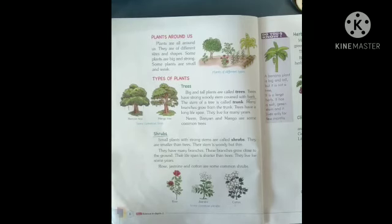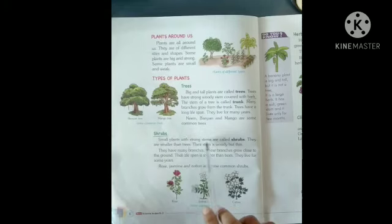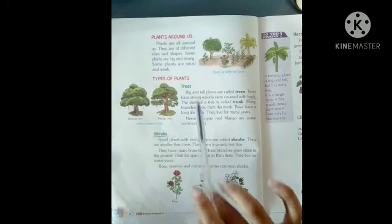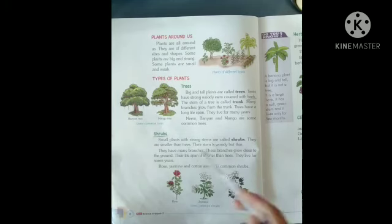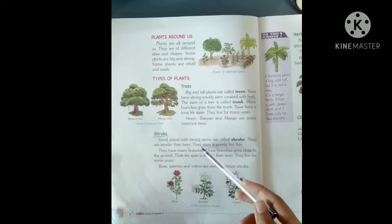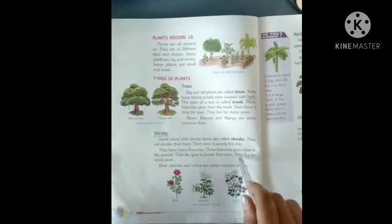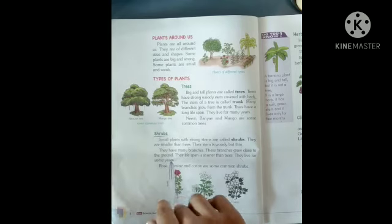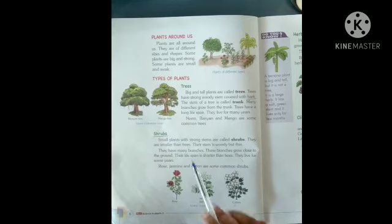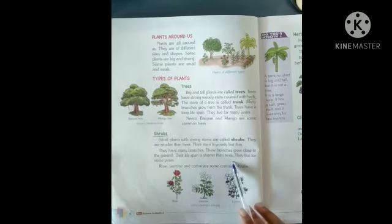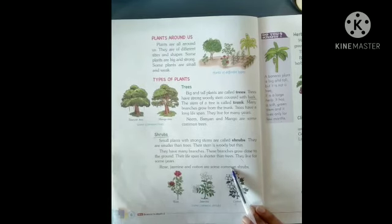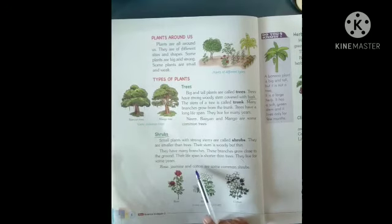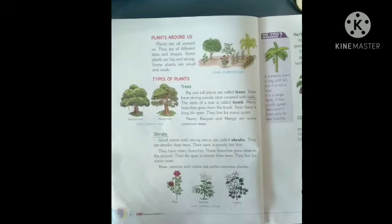The next topic is shrubs. Shrubs are small plants with a strong stem. They live very close to the ground. Small plants with a strong stem are called shrubs. They are smaller than trees. Their stem is woody but thin. They have many branches which grow close to the ground. Their life span is shorter than trees. Rose, jasmine, and cotton are some common examples of shrubs.